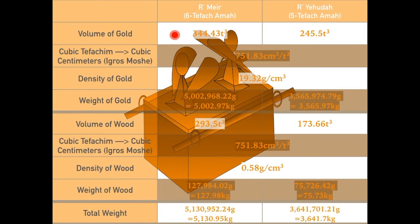Now we figure out how heavy this thing is. As we just said, Rabbi Meir holds that there are 344.43 cubic tefachim of gold. Using Rav Meir's figure of 751.83 cubic centimeters per cubic tefach and the density of gold being 19.32 grams per cubic centimeter, it comes out that just the gold weighed over 5,000 kilograms. He also holds that there are 293.5 cubic tefachim of wood. Once again, there are 751.83 cubic centimeters per cubic tefach. The density of wood, specifically cedar wood, is 0.58 grams per cubic centimeter. Thus, according to Rabbi Meir, the wood weighed just under 130 kilograms. Overall, that means that the Aron weighs 5,130.95 kilograms, according to Rabbi Meir.